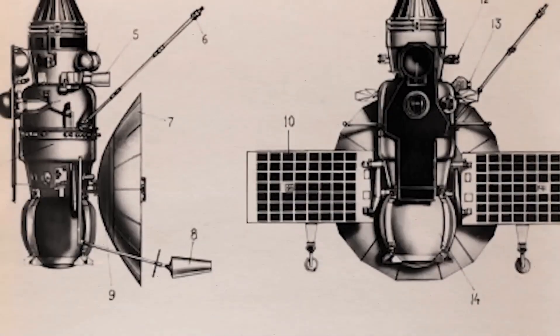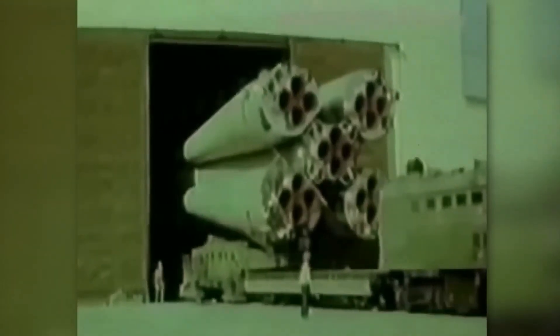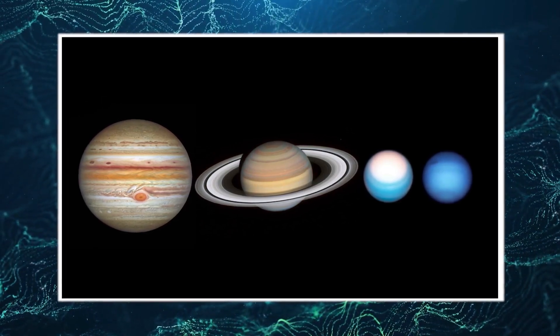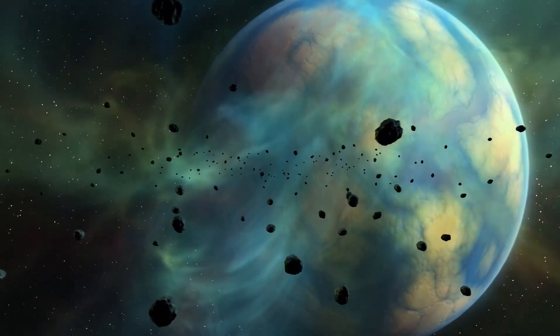Flandro calculated that a journey from Earth to Neptune, which would have taken 30 years, would now be accomplished in just 12 years, thanks to these gravity assists. There was just one catch: this alignment only happens once every 176 years.